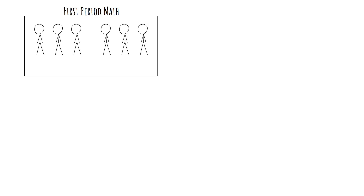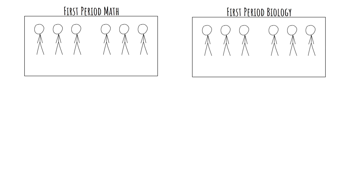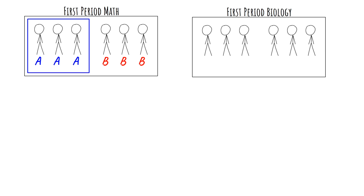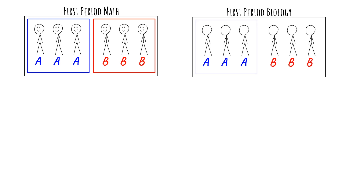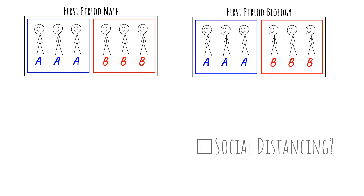I can illustrate what this would look like. Let's pretend we have a first-period math class and a first-period biology class, each of which has six students. Our job is to assign half of each class to an A group and the other half to a B group. The idea is the A group will attend school for a week while the B group stays home and learns remotely, and then the next week it swaps. The B group attends school while the A group learns remotely. You've met your social distancing requirements and you're able to successfully socially distance in all of your first-period classes.